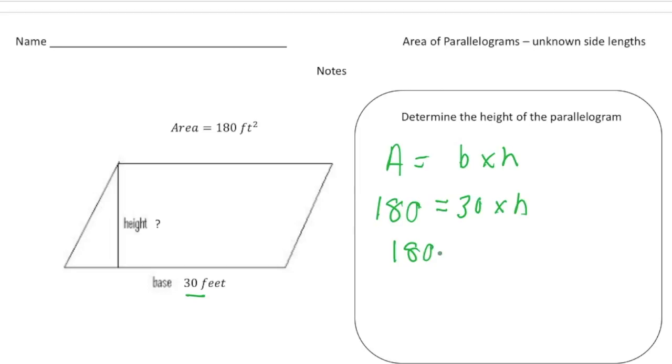Now we have 180 equals 30h. We use simple algebra to solve for h. The opposite of multiplying is dividing, so I'm going to divide both sides by 30. 180 divided by 30 is 6, so that means the height of this parallelogram is 6 feet. Because it's only one dimension, notice it's just feet and not square feet or cubic feet.